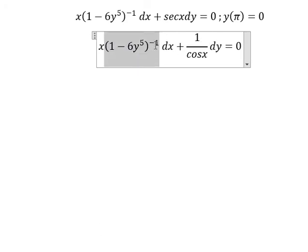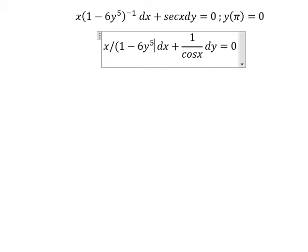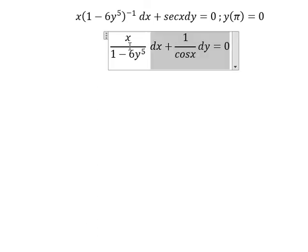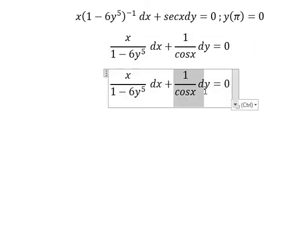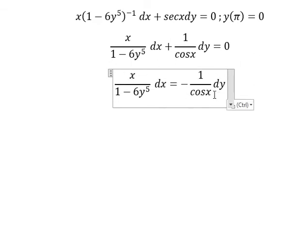This one in here with the negative number one, we can write in this way. Next, I will put this one to the right and we have negative one over cosine x dy.